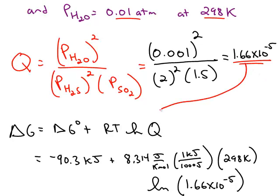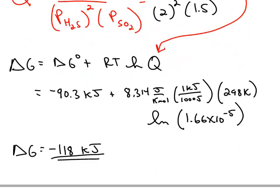I can plug that value into the equation. I knew the standard delta G from the appendix calculation. The gas constant R has to be converted because my delta G was in kilojoules and the gas constant R is in joules.